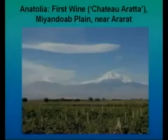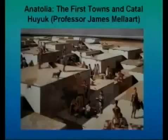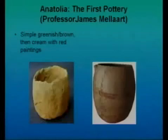In Anatolia, the most ancient wine is a Chateau Ararat, from the Mandur plain near the Ararat Range — there's a picture of a vineyard just beneath the mountains. Interestingly, after the flood, Genesis says Noah planted a vineyard. We find the first evidence of wine growing in that same region. We also find the first towns appearing there; Catalhoyuk is well-known — Professor James Mallart did extensive excavation work from the 1960s onwards, finding flat houses with ladders and holes, reconstructed as the beginning of the first towns.